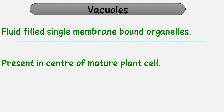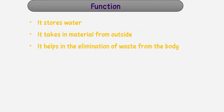ایک بڑا central vacuole بننے کی وجہ سے nucleus جو کہ center میں present ہوتا ہے، اسے push کر دیا جاتا ہے towards the side۔ So the central large vacuole is in the center, and the nucleus of the mature plant cell is present at the side۔